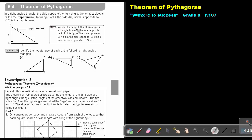Note, we use the small letter of an angle in a triangle to name the side opposite to it. In this figure, the side opposite angle A (capital letter) will be side small a. The side opposite angle B, opposite small b. So small b represents the side, and capital letter B represents the angle.